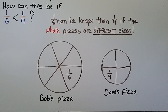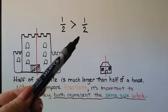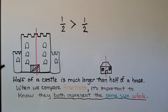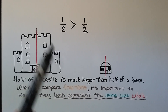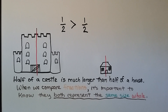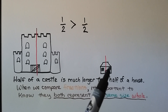When comparing fractions, they have to represent the same size whole. We could say a half is greater than a half because half of a castle is much larger than half of a house. When we compare fractions, it's important to know they represent the same size whole. We need to compare a castle to a castle or a house to a house.